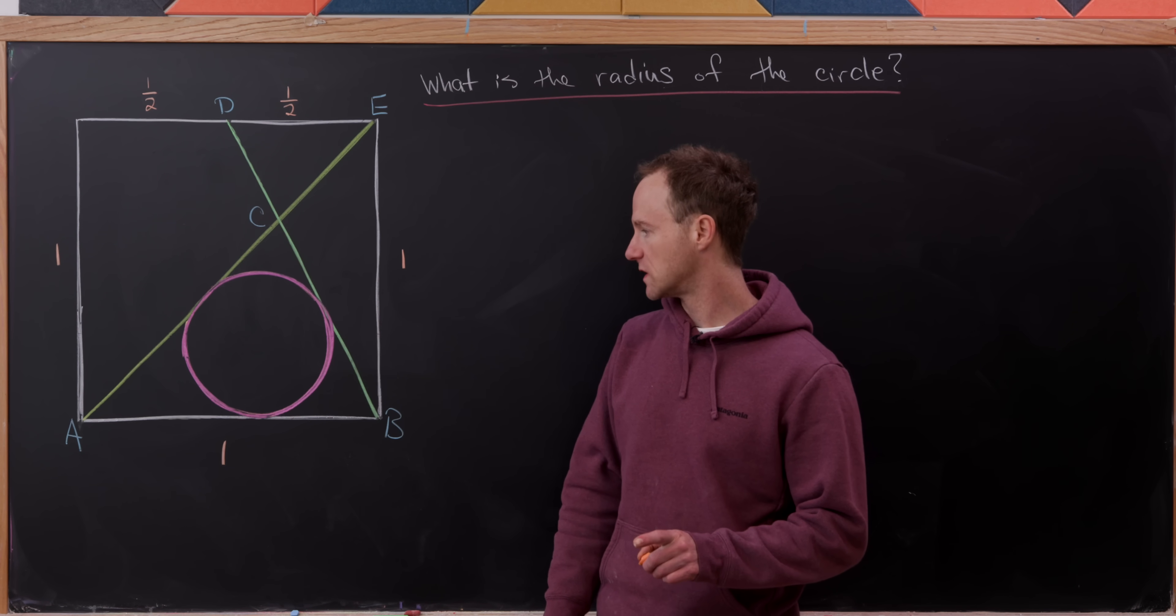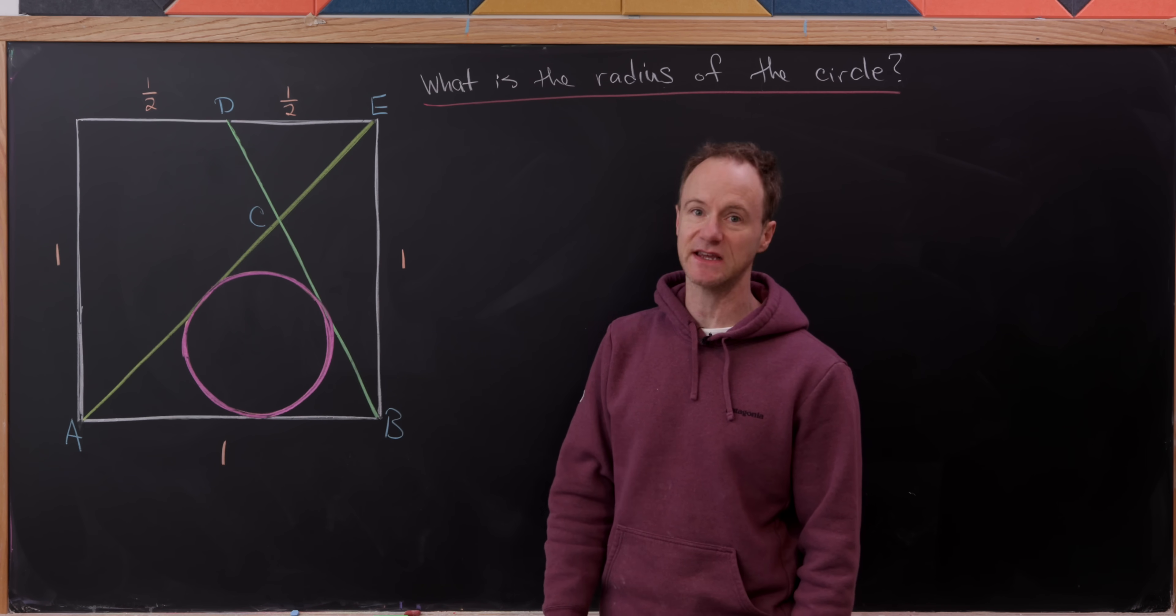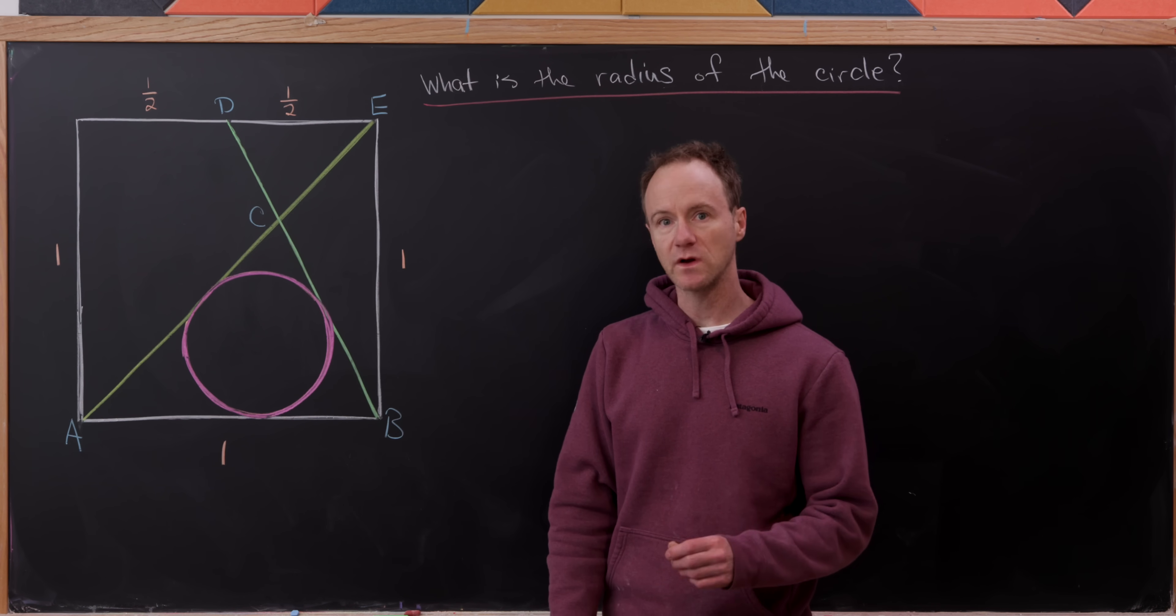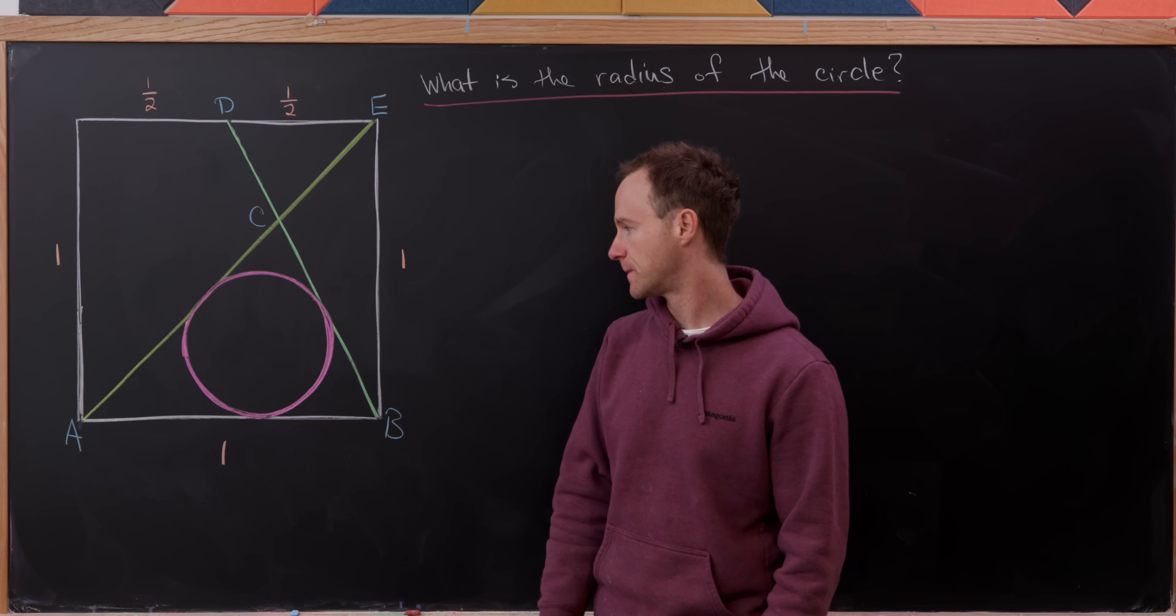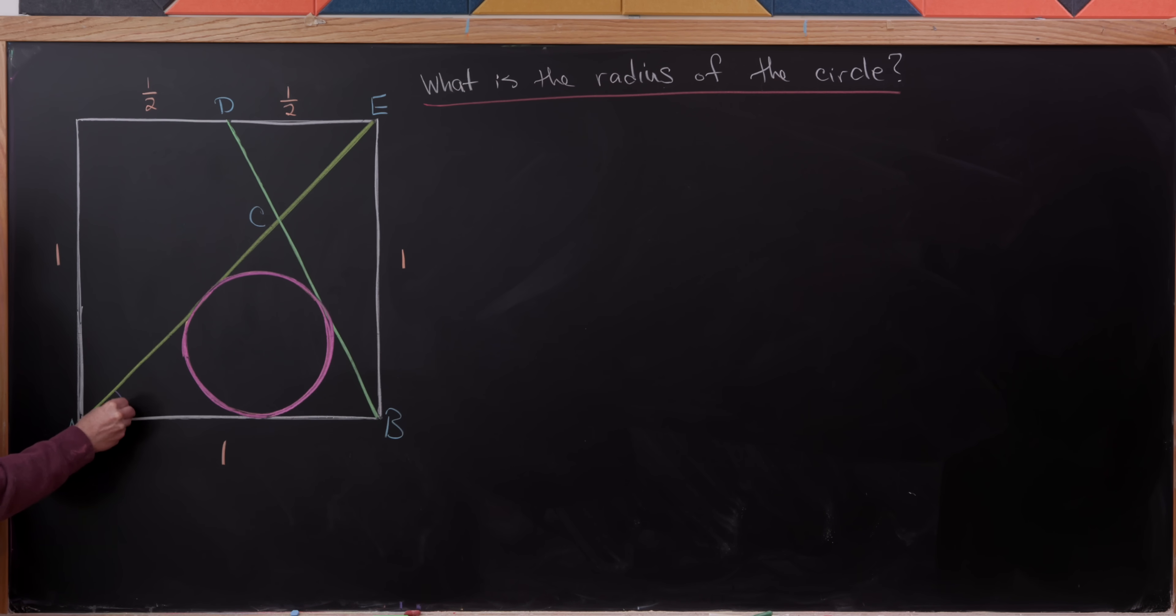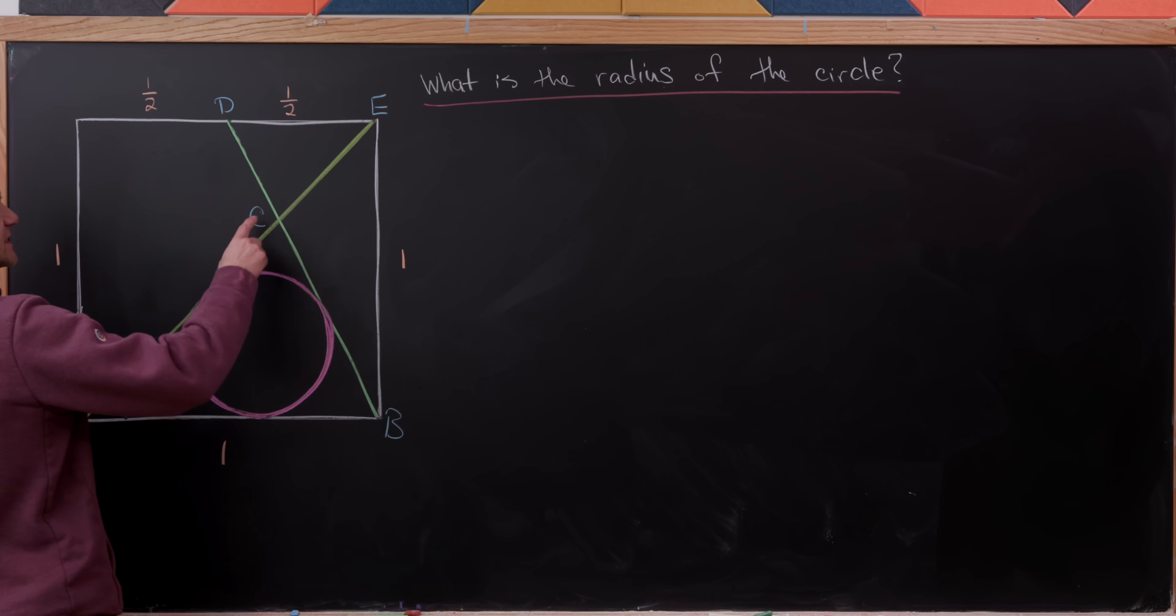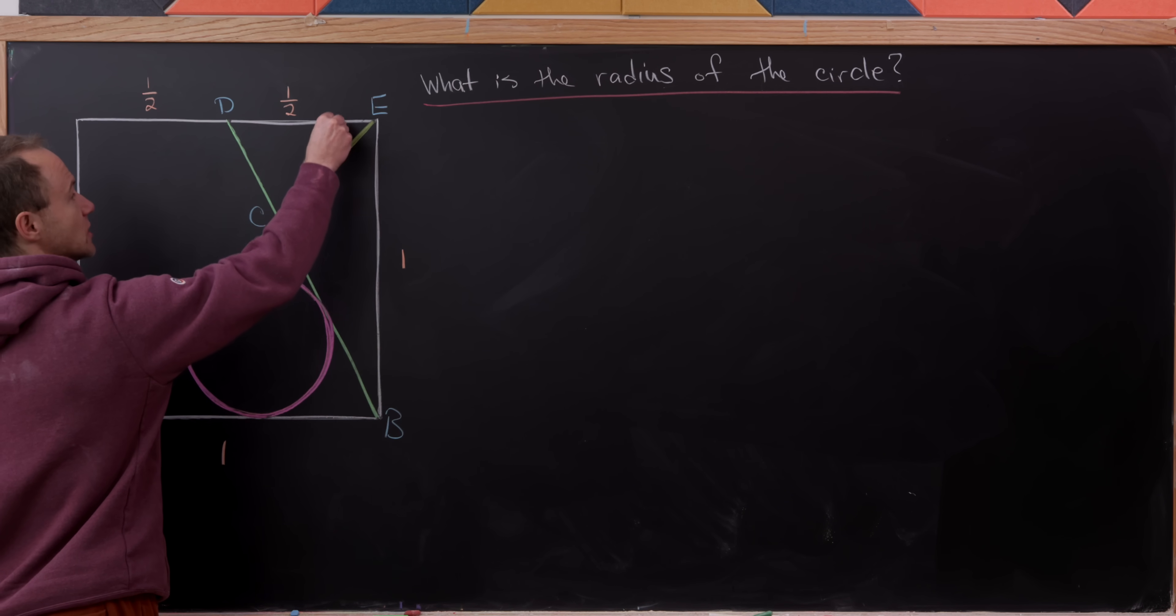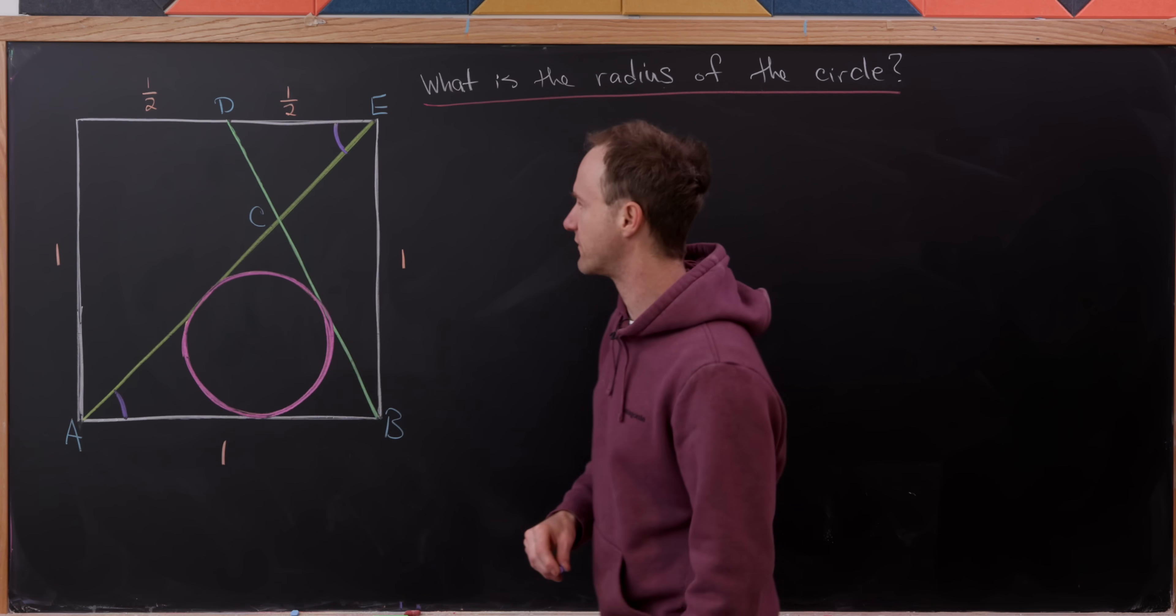And now our first little goal is to show that triangle ABC and triangle CDE are similar. We'll do that using the angle-angle-angle theorem. Let's observe that this angle CAB is obviously a 45-degree angle. That's because it bisects this 90-degree angle, given that it's a diagonal of a square. But then that makes, for very similar reasons, this angle CED also 45 degrees. So I'll just put this purple arc for those 45-degree angles.